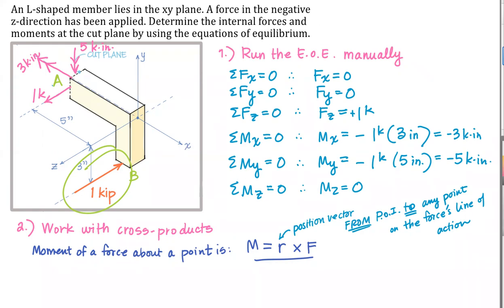Let's say that the centroid of this back plane is point A, and I'm going to choose point B to be down here at the bottom. That meets my criteria: I need one point at the centroid of the cut plane and my other point can be anywhere on the line of action of that force. So I'll pick that center point right there to make my calcs nice and easy. My position vector for the moment of this force about point A goes from A to B, and I plug in the one-kip force for F.